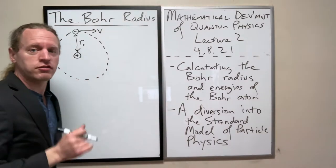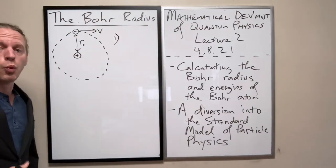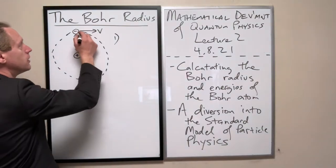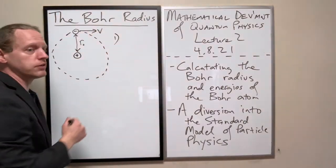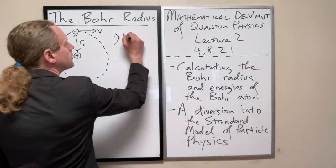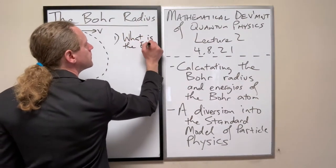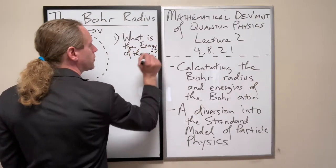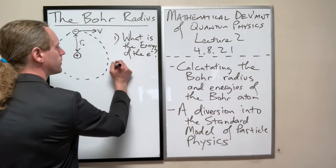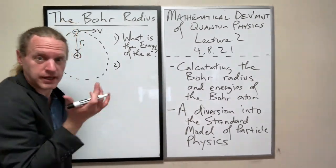The question that I'm going to ask, it's two things. Number one, what is the energy of the electron, specifically? And two, at what radius will it orbit in that ground state as well?